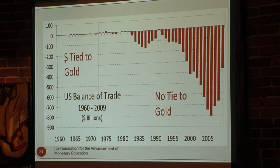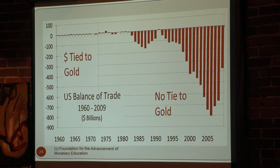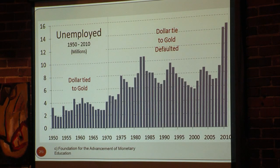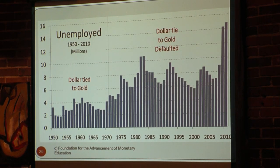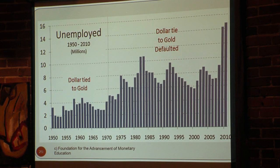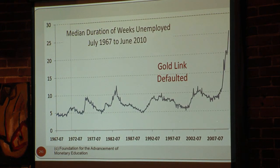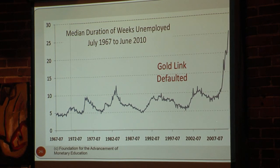Gold was really a stabilizing force that kept the deficit in check, kept debt in check, kept leverage in check. Look at what happened to unemployment: you always had some unemployment in the United States, but after the tie to gold broke, today the official number is something like 15 to 16 million people unemployed. That last report where they said unemployment dropped from 9.8 to 9.1 percent includes a seasonal adjustment — if you back out the seasonal adjustment, the number of unemployed actually went up. And not only that, the duration of unemployment used to be maybe four or five weeks; today it's something like 26 weeks.